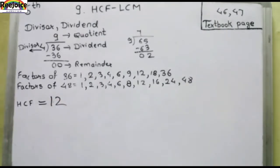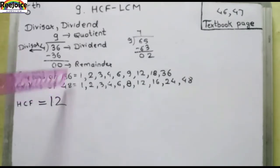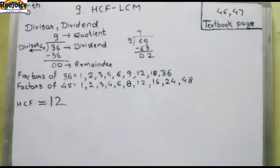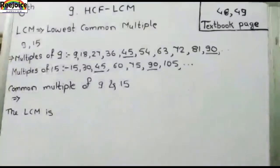So 12 will come. The answer for 36 and 48 is that HCF is 12. So this is how we find HCF.